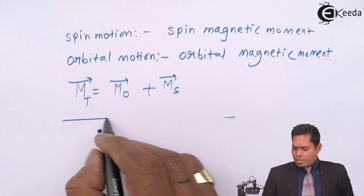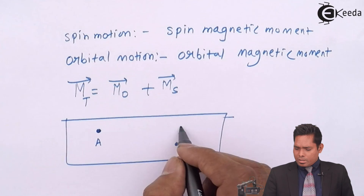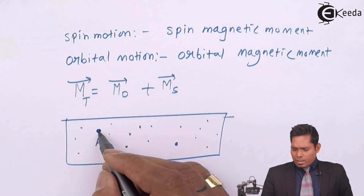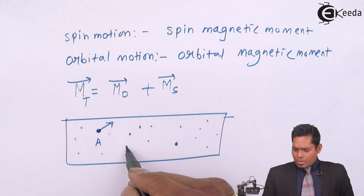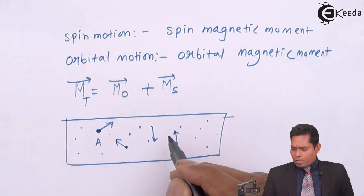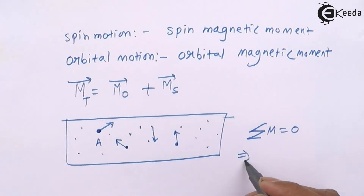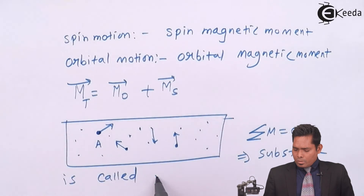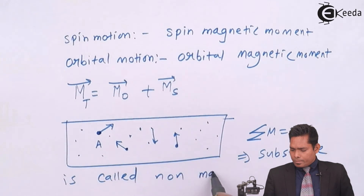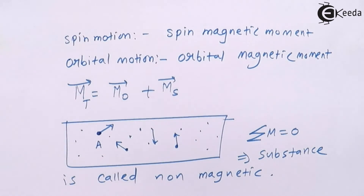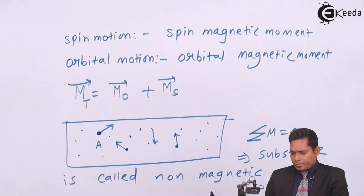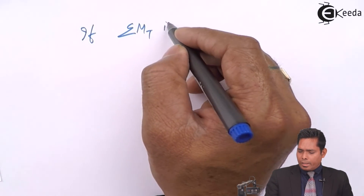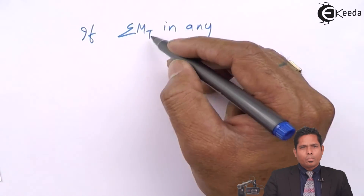A substance is made up of many atoms. Suppose this atom has total magnetic moment M in one direction, another atom has M in another direction, and so on. If the total magnetic moment of all atoms is zero, the substance is called non-magnetic. If it is not zero, then it is magnetic — substances like iron, cobalt, and nickel are magnetic substances.